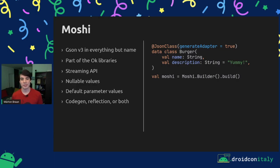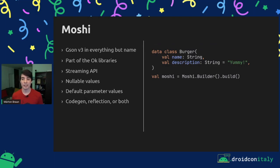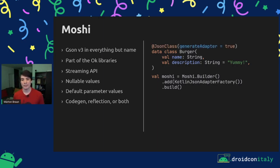Moshi can be used in a couple of different setups. It can be used with code generation, with reflection, or both. The code on the right-hand side is the code generation setup — that's what the generateAdapter true option specifies. With this setup, an adapter is generated for the Burger class at compile time and picked up by the Moshi builder. These generated adapters are automatically added to each Moshi instance. You can also go the reflection route — you don't need that annotation, but you do need to add an adapter factory to Moshi which uses Kotlin-based reflection. You can also mix these: if you have the reflection-based adapter factory but also generate adapters for some classes, those generated adapters will be used first if available, and Moshi will fall back on the reflection-based approach for models without adapters.